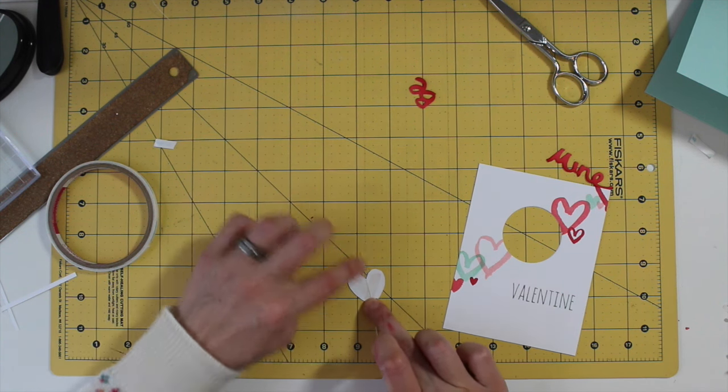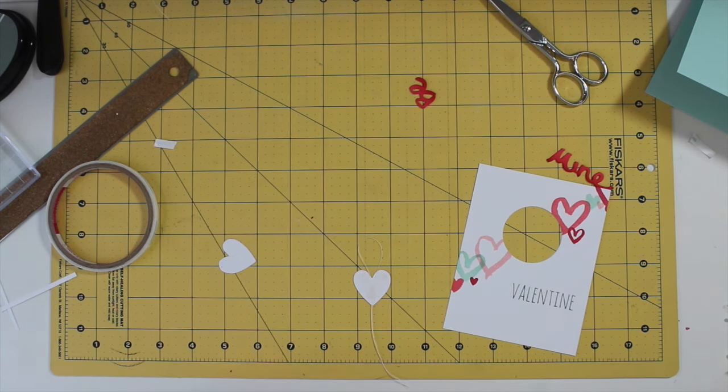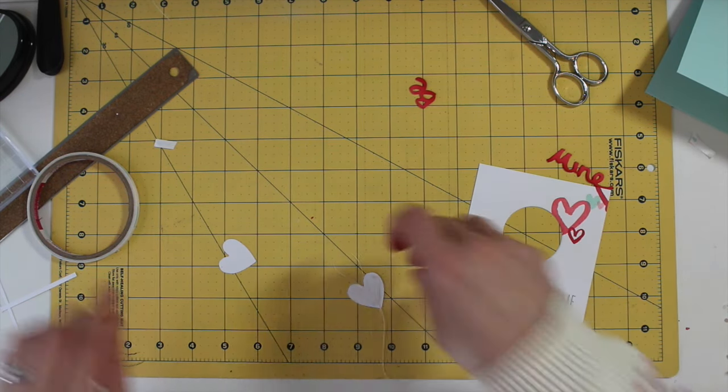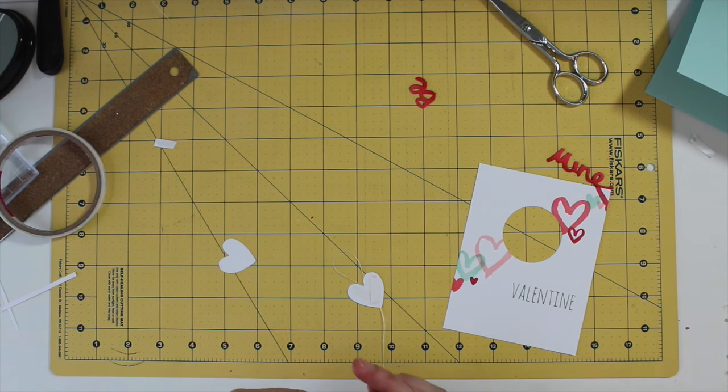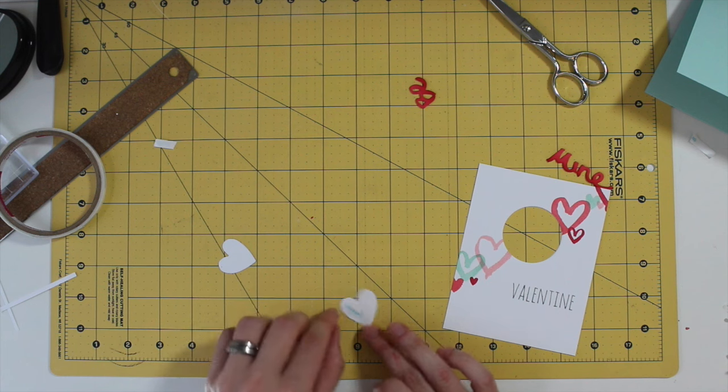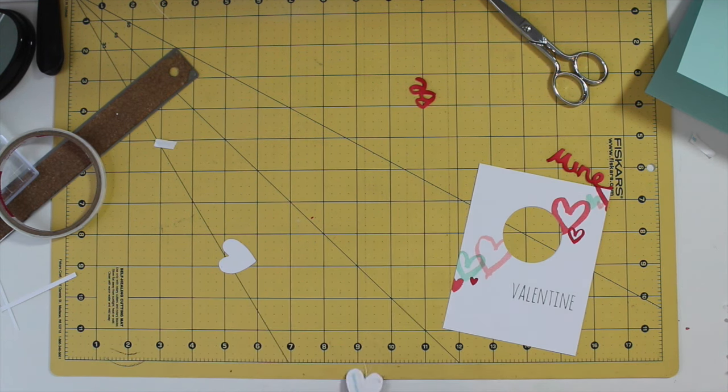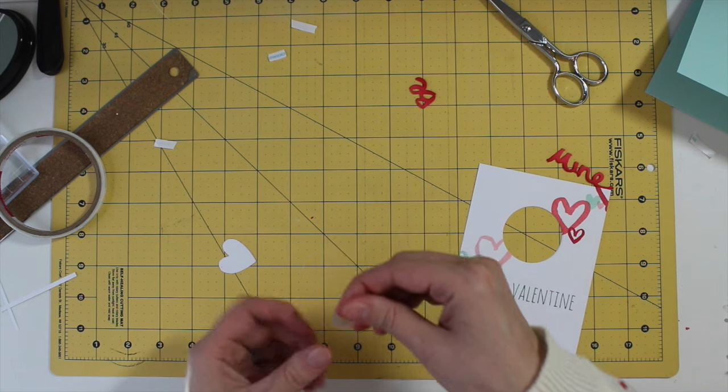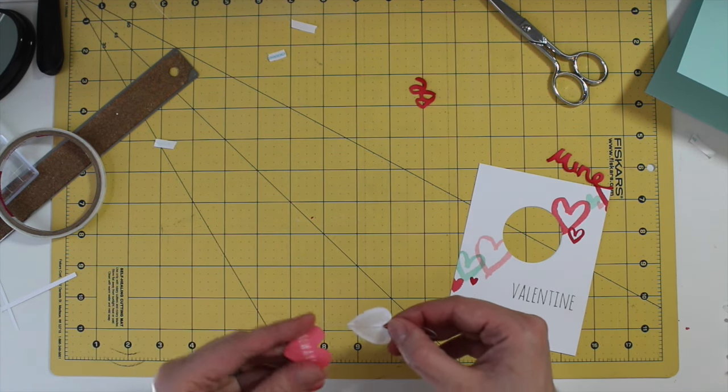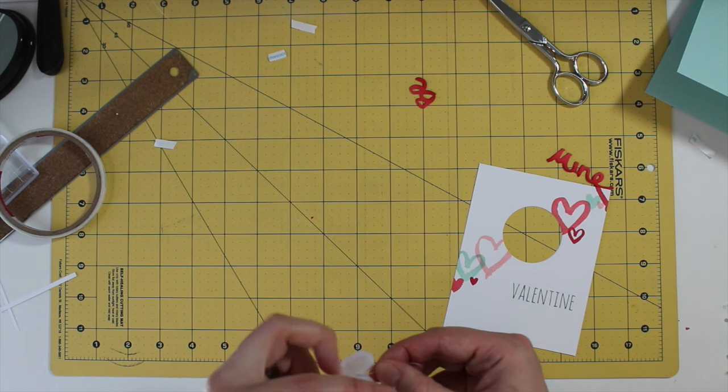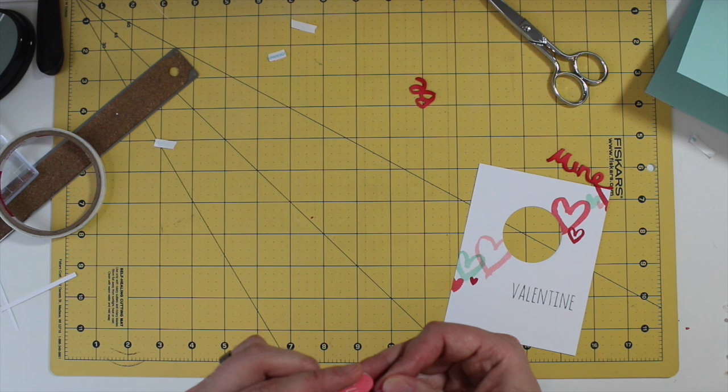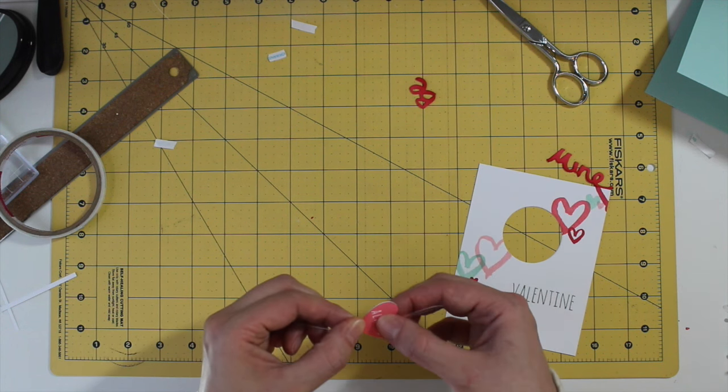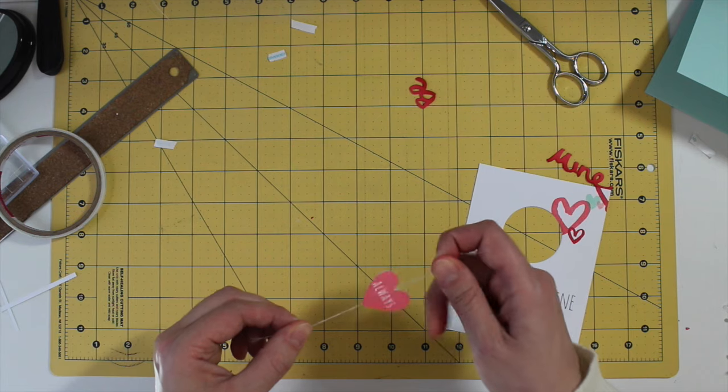So you're going to go ahead and stick that to the exposed adhesive. Make sure it's nice and straight up and down. And then just to be nice and secure, I add extra adhesive on top of the thread to make sure it's nice and locked in. It's maybe not necessary, but I just want to make sure that it doesn't slip. And once I remove that adhesive backing, I can then sandwich the other heart die cut in place. Here we go. Just smush it together and watch it spin.